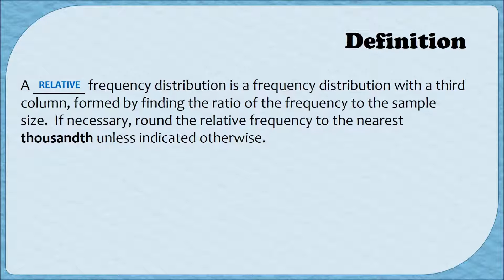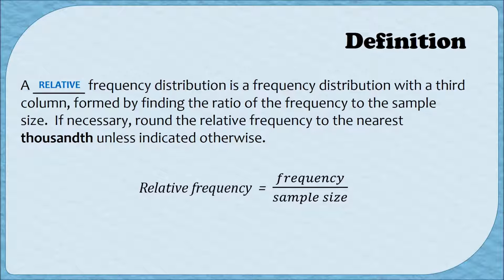So that we're consistent throughout all of the videos in this series, we're going to be rounding our relative frequencies to the nearest thousandth. The formula to find a relative frequency is to divide the frequency by the sample or population size. We're going to work through two examples: the first will be creating a relative frequency distribution, and in the second, we're going to read from and interpret a relative frequency distribution.